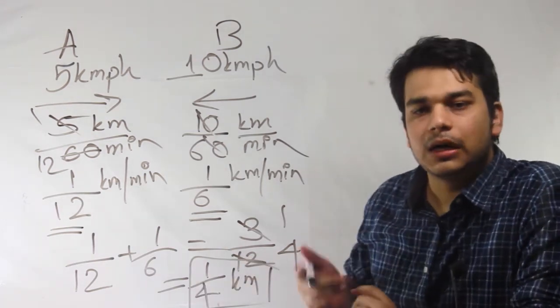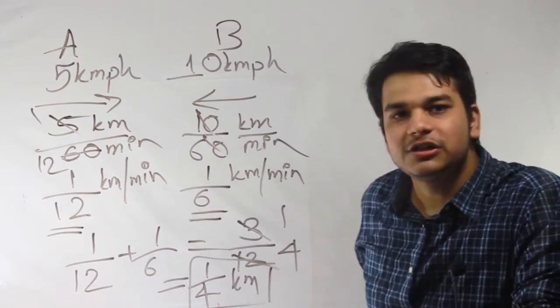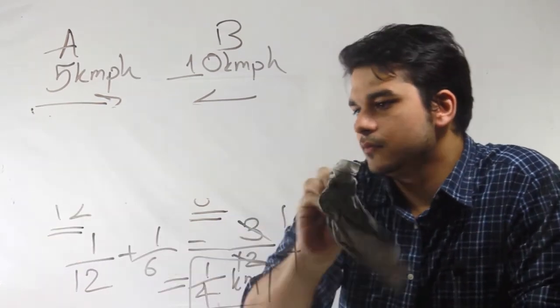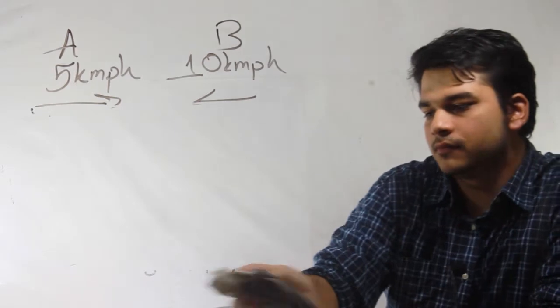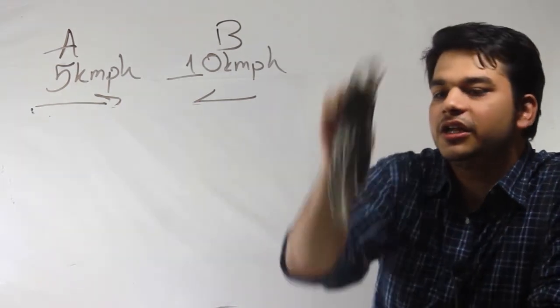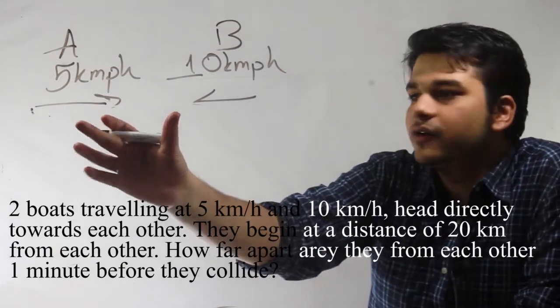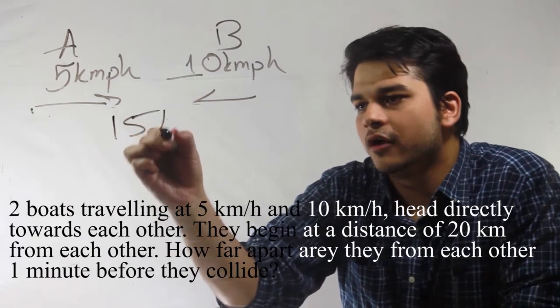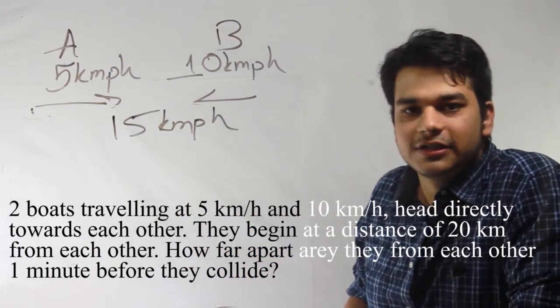But you can also do this by a shortcut method. If the two boats travel towards each other, by the theory of relative speed, the total speed will be 5 km plus 10 km per hour, which would be 15 km per hour relative speed.